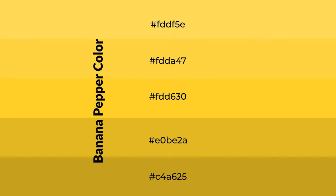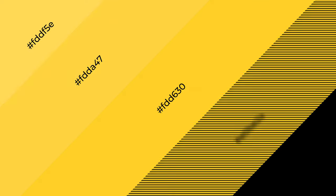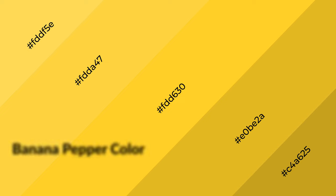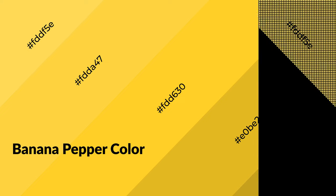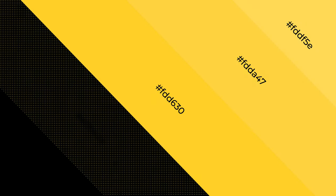To generate shades of a color, we add black to the color. Shades are used in patterns, 3D effects, and layers. Shades create depth and drama. Banana pepper is a warm color and it emits cozier and active emotion.